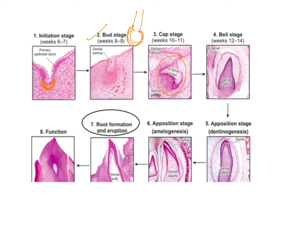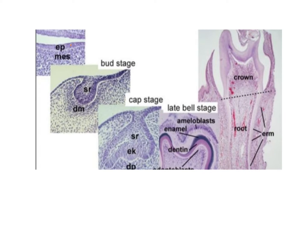So this is the oral ectoderm and this is the mesenchyme. It forms the dental bud where you have the epithelial cells. From there it goes to the cap stage where you have the stellate reticulum, the dental papilla, and the outer and inner enamel epithelium. This forms the outer enamel epithelium whereas this is the inner enamel epithelium, and this inner enamel epithelium divides to give rise to the ameloblasts, which lay down the enamel.